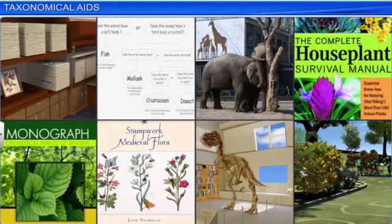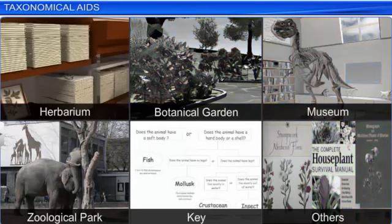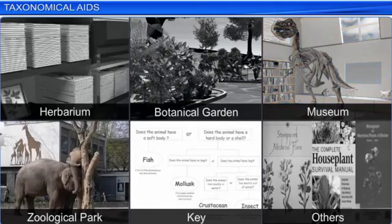Over the years, biologists have developed many methods and techniques that help in taxonomic studies. These are also known as Taxonomical Aids. Herbariums, Botanical Gardens, Museums, Zoological Parks, and Keys are some examples of taxonomical aids.